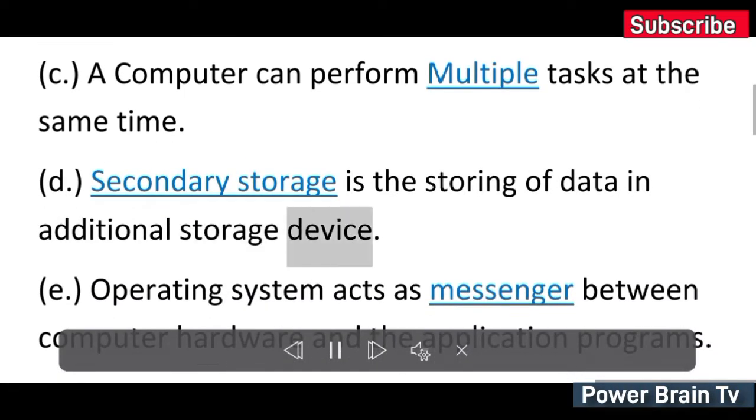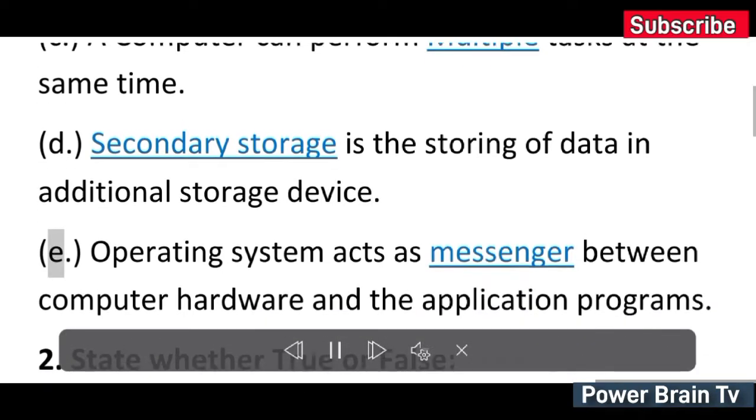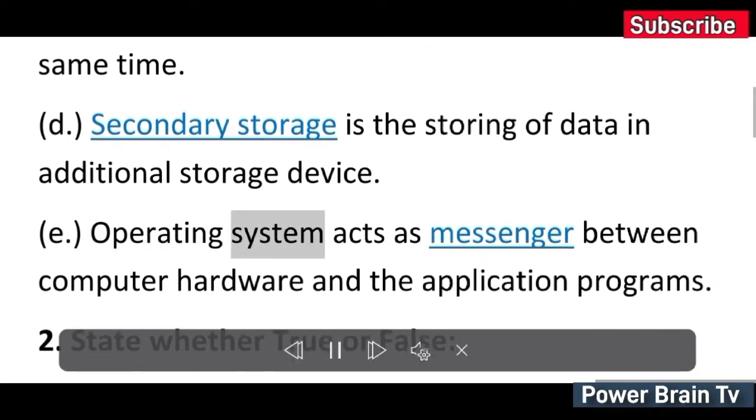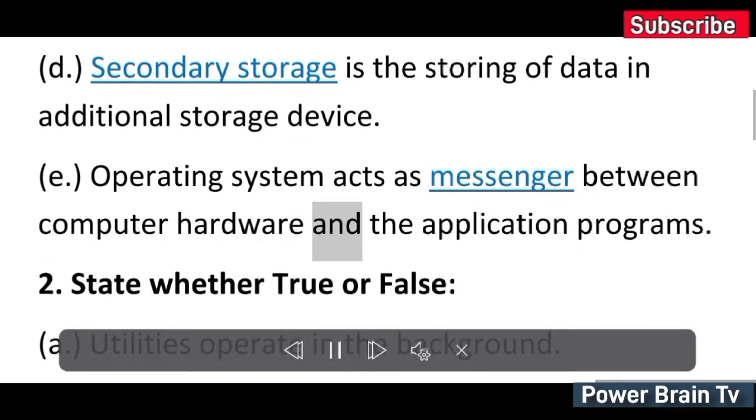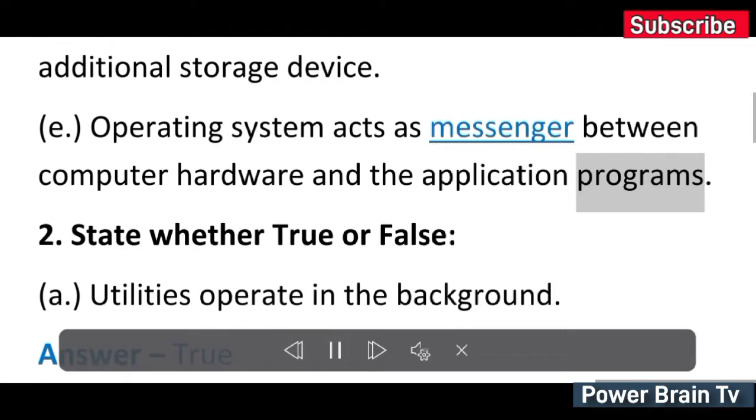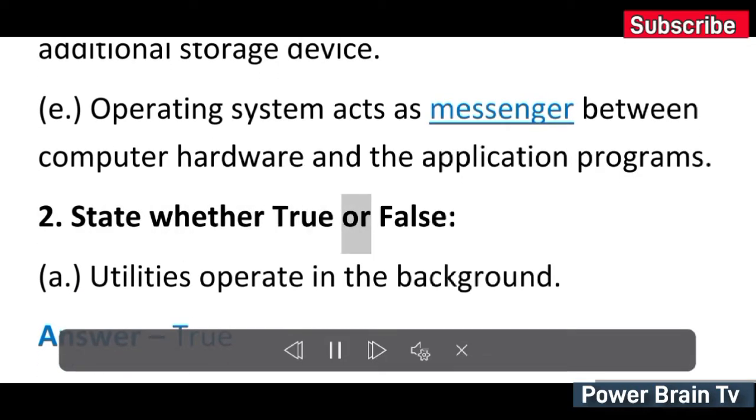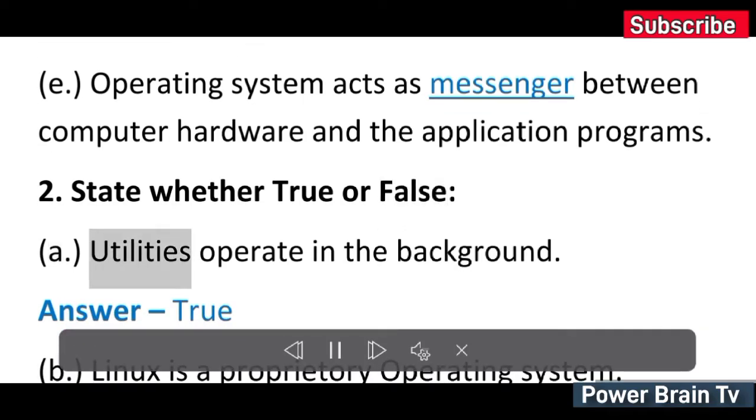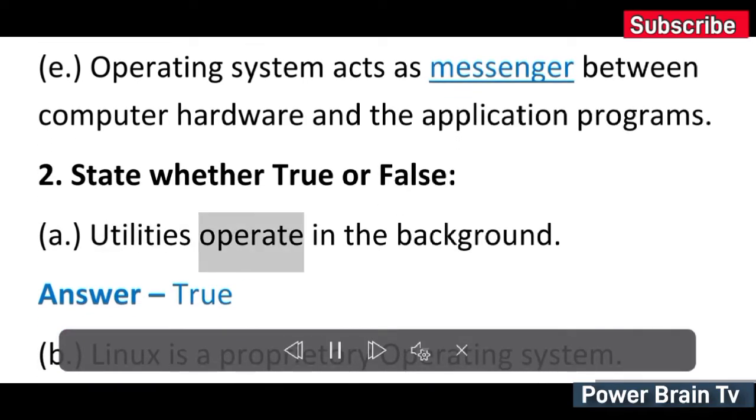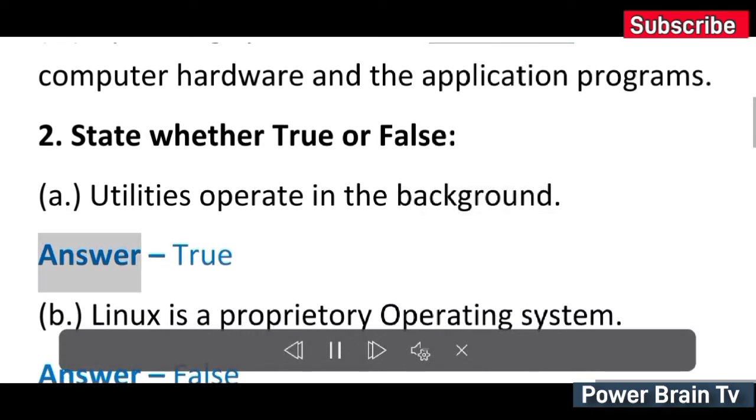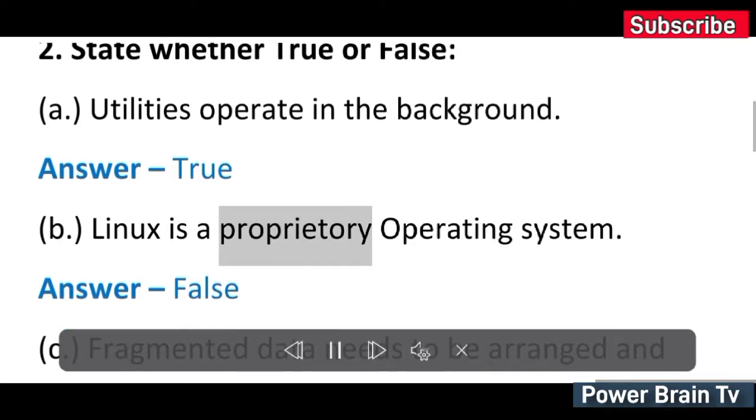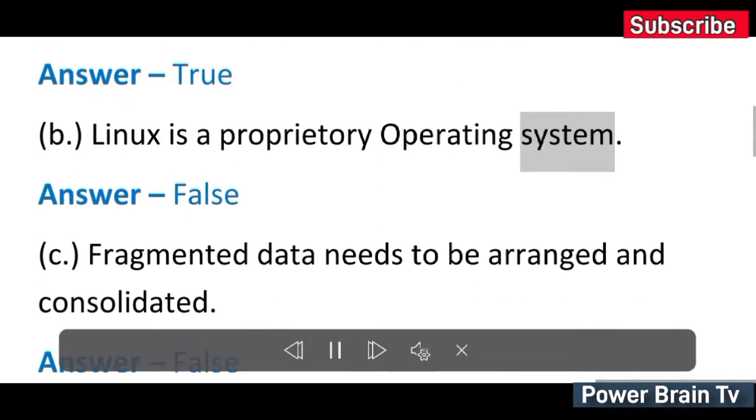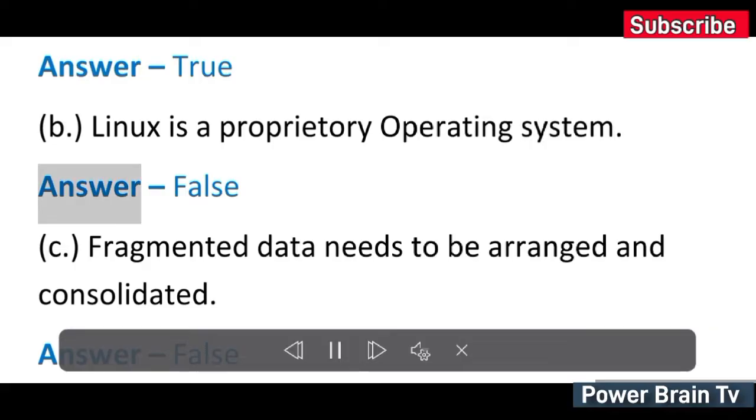(e) Operating system acts as messenger between computer hardware and the application programs. 2. State whether true or false. (a) Utilities operate in the background. Answer: True. (b) Linux is a proprietary operating system. Answer: False.